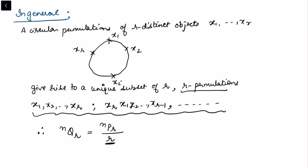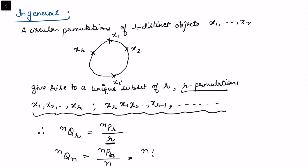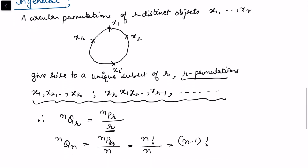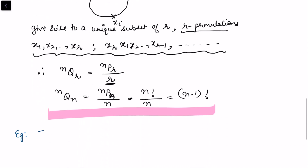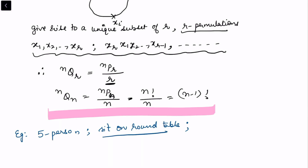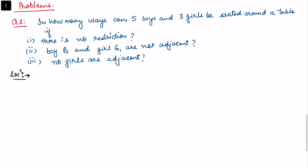This r comes because within r elements it is possible to change their positions in r ways. In general, for n objects chosen from n: nPn divided by n equals n factorial divided by n, which is n minus 1 factorial. That is why for circular permutation we use the formula: for n objects placed at a round table, there are n minus 1 factorial arrangements. For example, 5 persons around a round table can sit in 4 factorial ways.